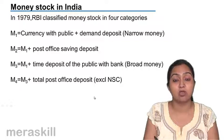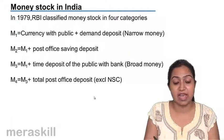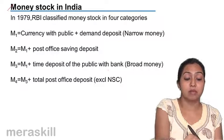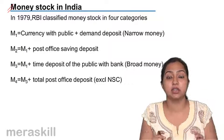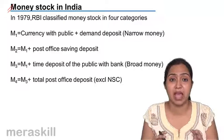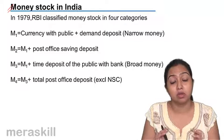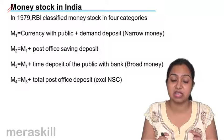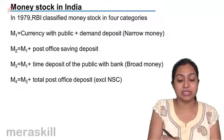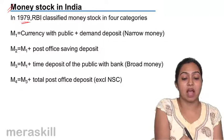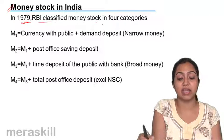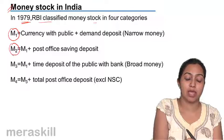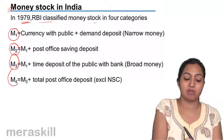Let us talk about money stock in India. What is considered as money stock? The amount of currency that is in circulation, the amount of money that the bank has. In 1979, RBI classified money stock in four categories: M1, M2, M3, and M4.